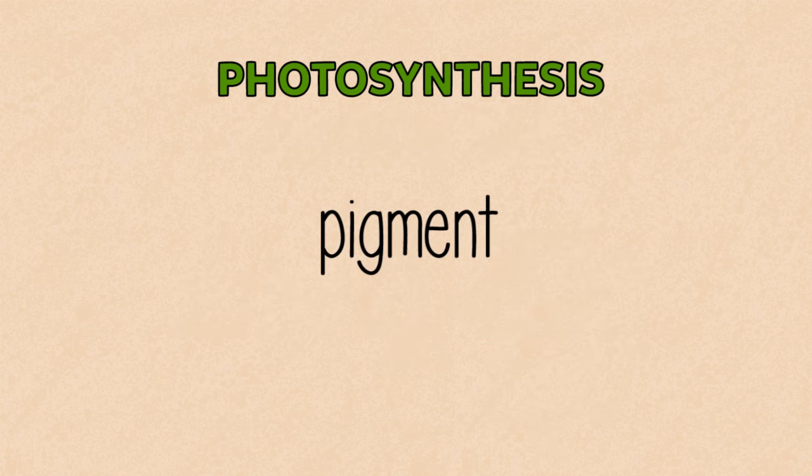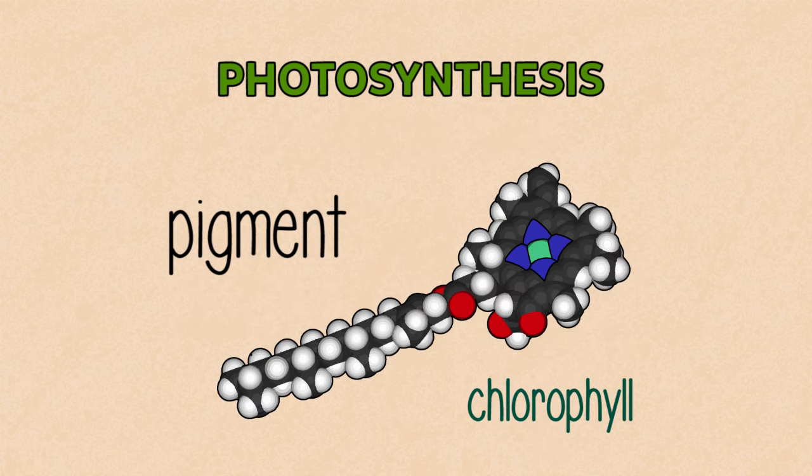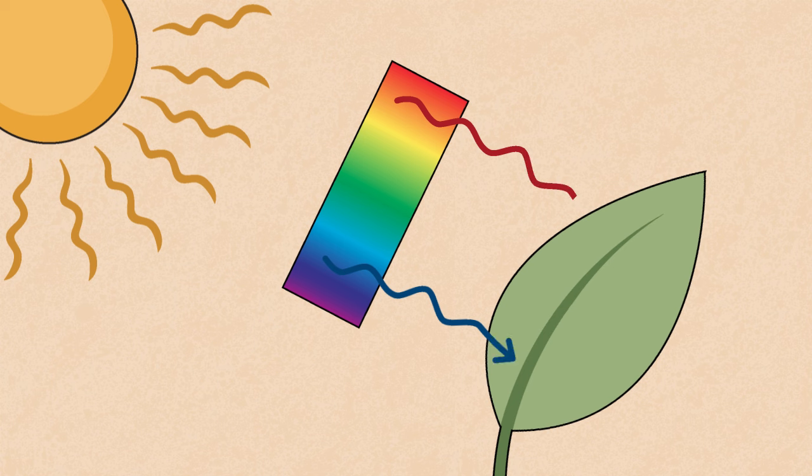Photosynthesis also needs a pigment called chlorophyll. The active site is a magnesium atom, coloured green in this model, which absorbs blue and red light from the sun's spectrum to drive the photosynthesis reactions, leaving the green light to be reflected, making the leaves look, well, green.